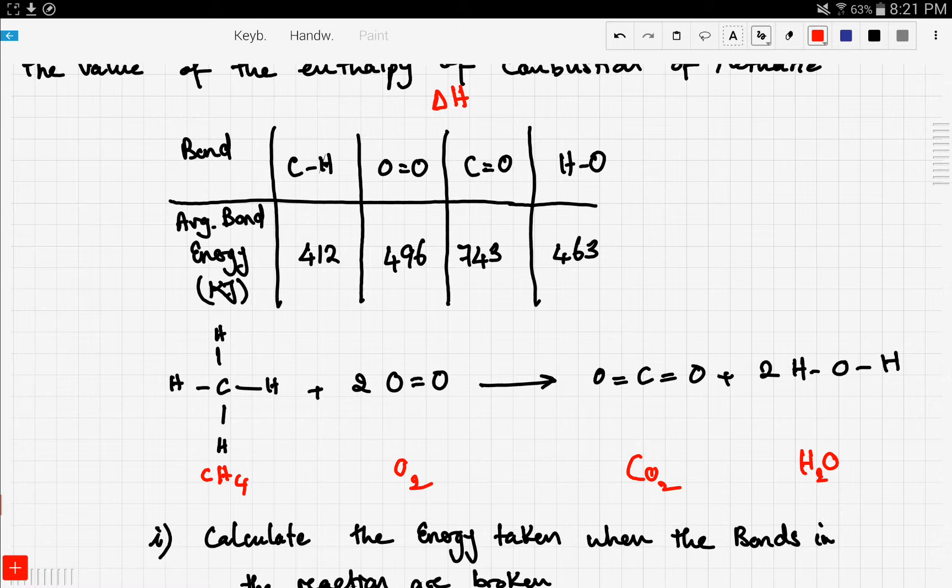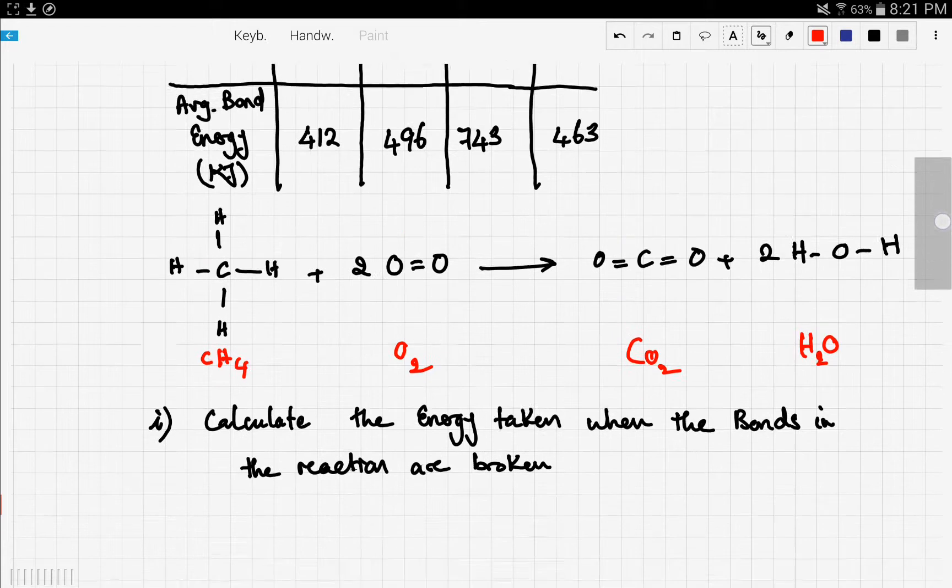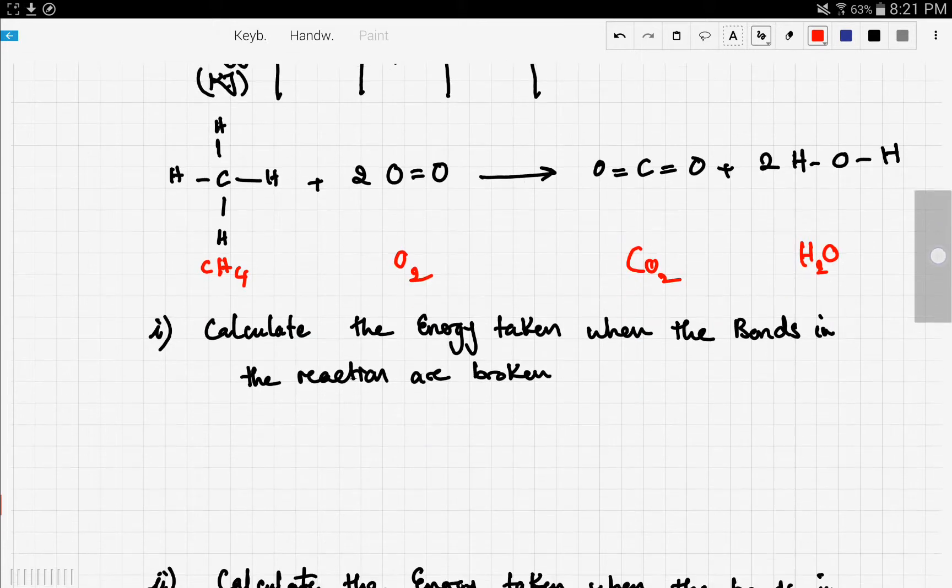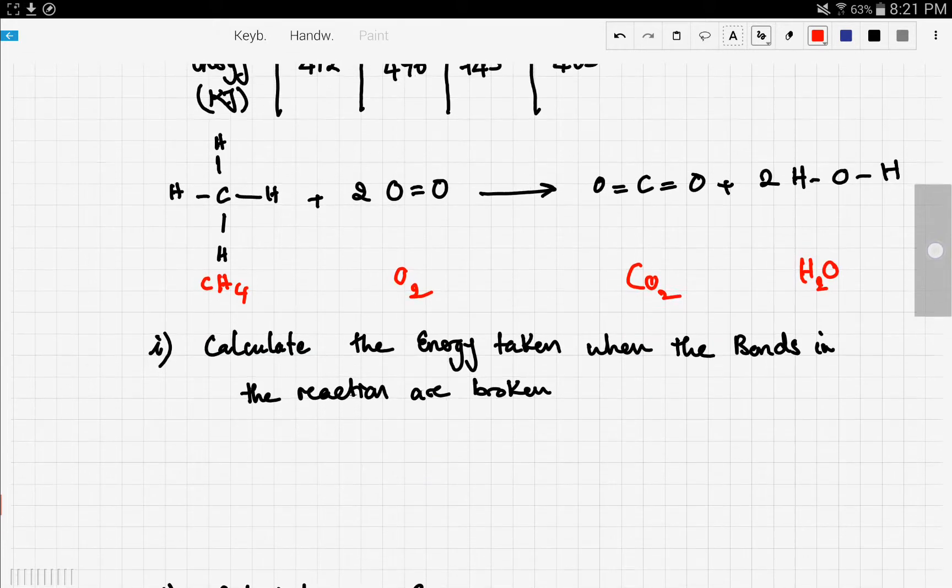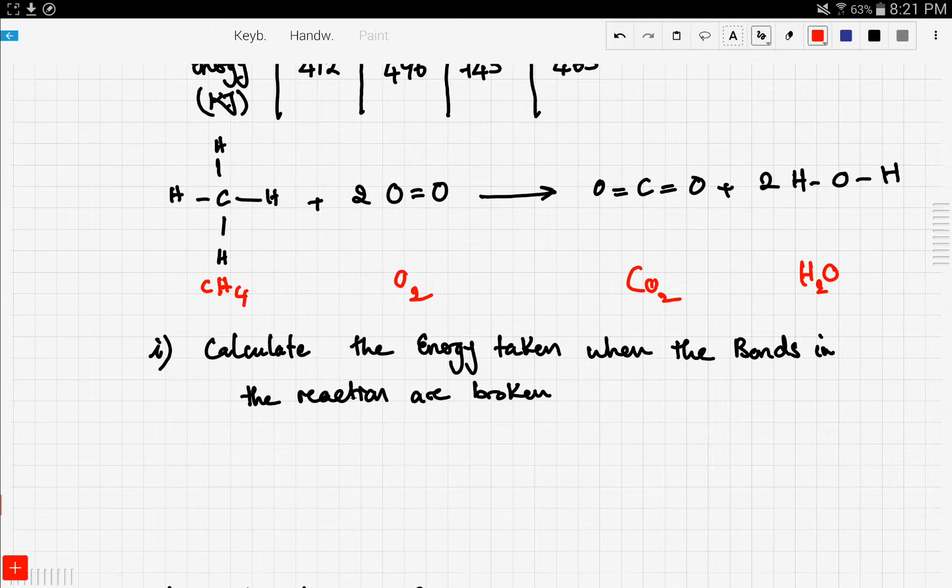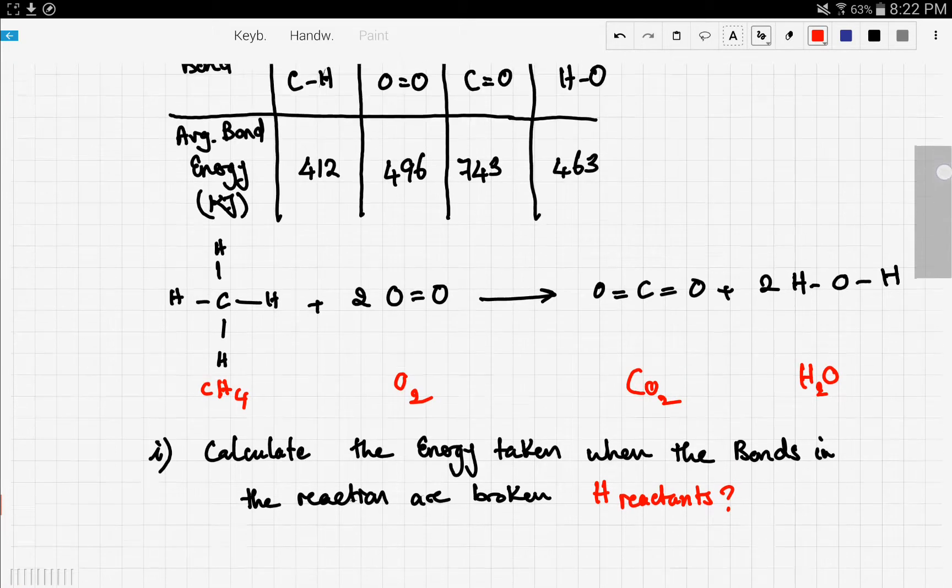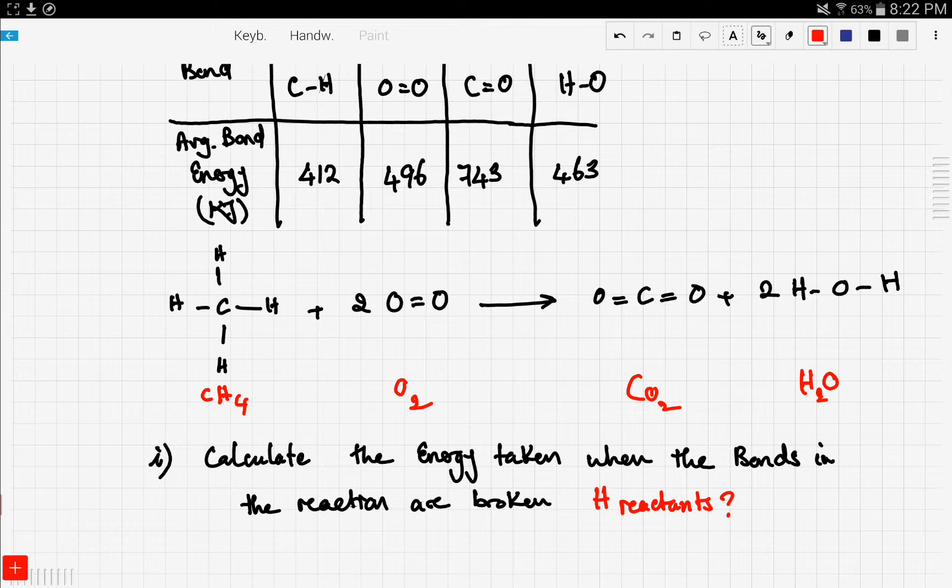So here, let's take a look. He asks you later, calculate the energy taken when the bonds in the reaction are broken. So he basically asks you for the delta H of reactants, okay? This is what the question is about. So let's see, the reactants in this case are methane and oxygen.